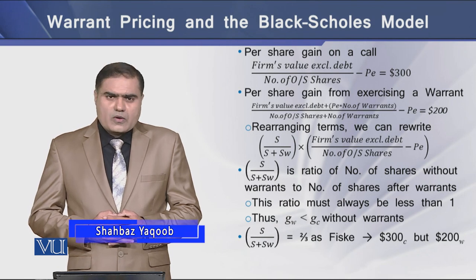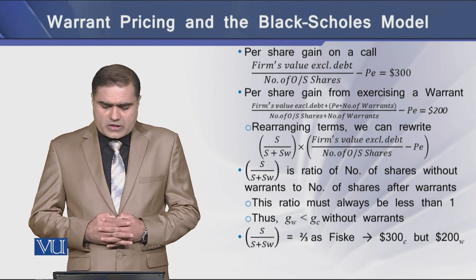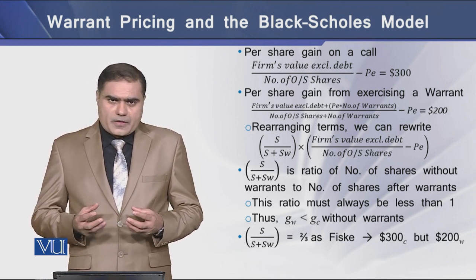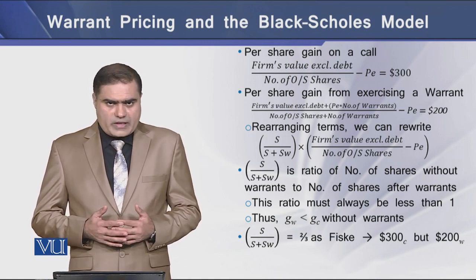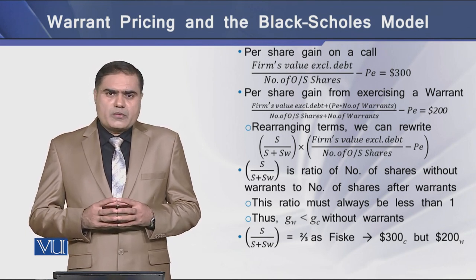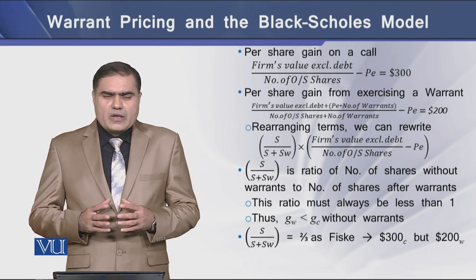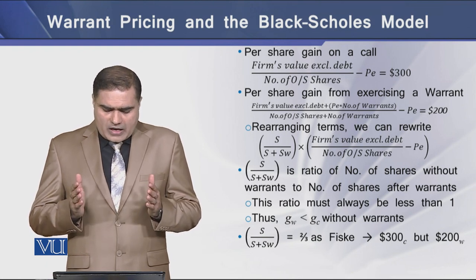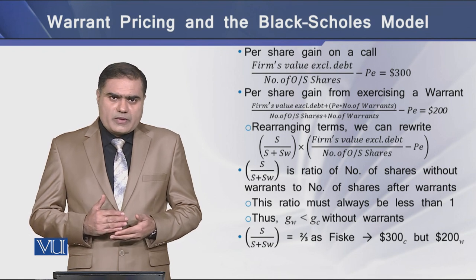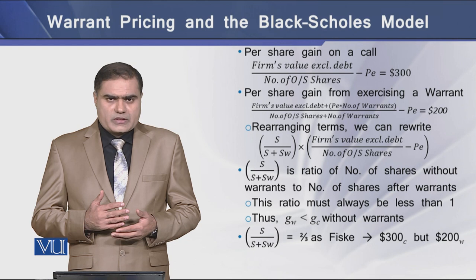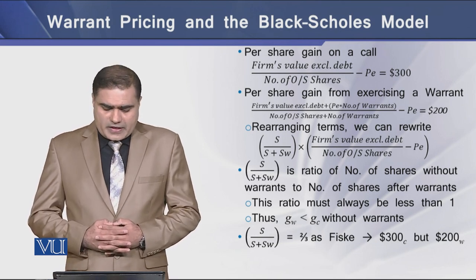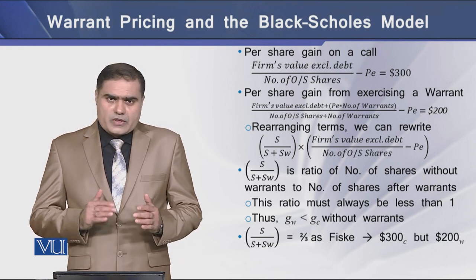The per share gain on a call was $300, whereas the per share gain on a warrant was $200. If we rearrange these two terms, we get a ratio S over (S + SW), where S is the number of outstanding shares before issuing the warrant and (S + SW) is the total number of shares outstanding after the issuance of the warrant. This ratio is always less than 1 because the number of shares has increased, meaning the gain on a warrant is less than the gain on a call.